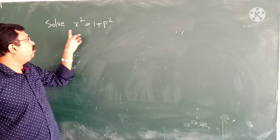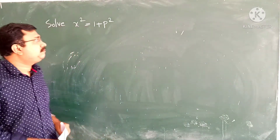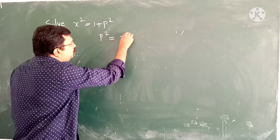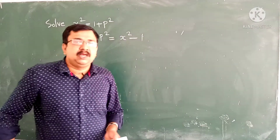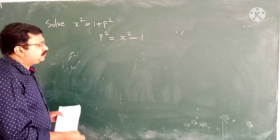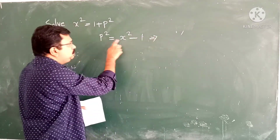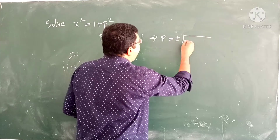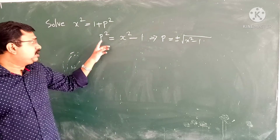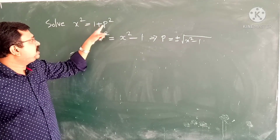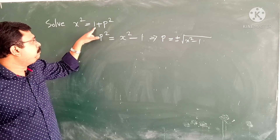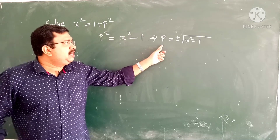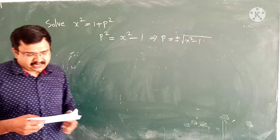Our first question is: solve x square equal to 1 plus P square. This can be rewritten as P square equal to x square minus 1. Therefore P is equal to plus or minus root of x square minus 1.